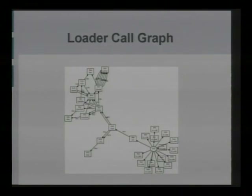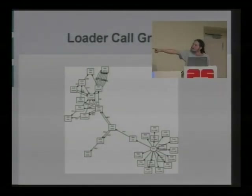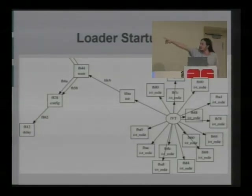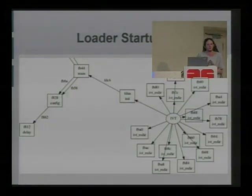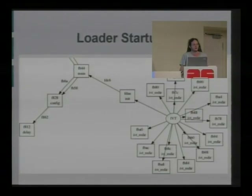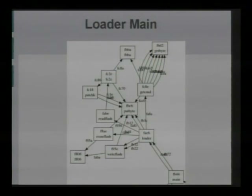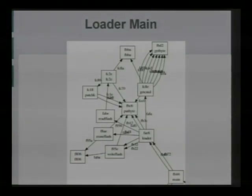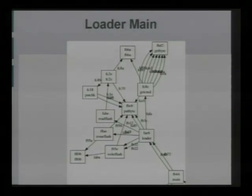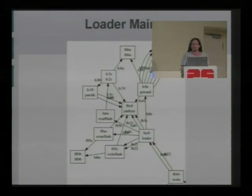At the bottom right we have the IVT as a circle and all of its handlers coming out from it — handling things such as an incoming serial byte. Only one of them actually calls another function, and that is 'init.' Init calls main, which calls configure. These names had to be written by hand after the code was reverse engineered. Only one interrupt actually calls anything — the interrupt executed when the chip is turned on.